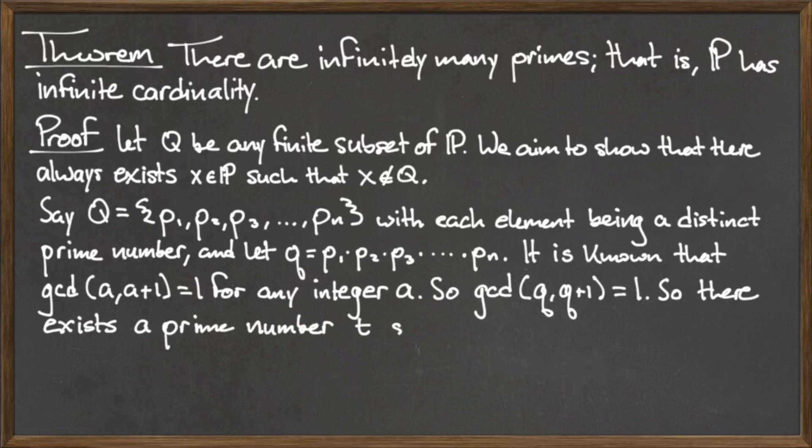Whenever the GCD of two integers is equal to 1, this means that those two integers are coprime. So, this means that there exists a prime number t such that t divides the integer q+1 and t does not divide q.